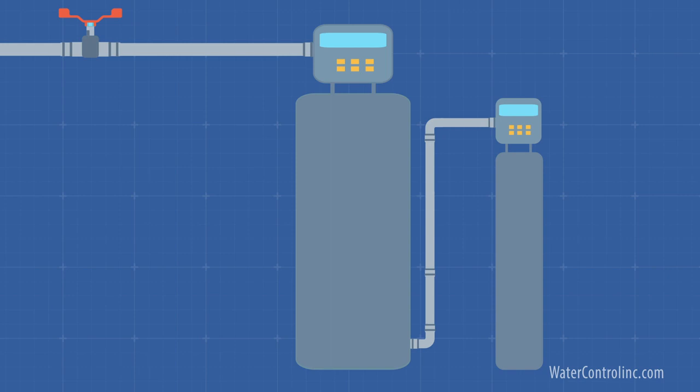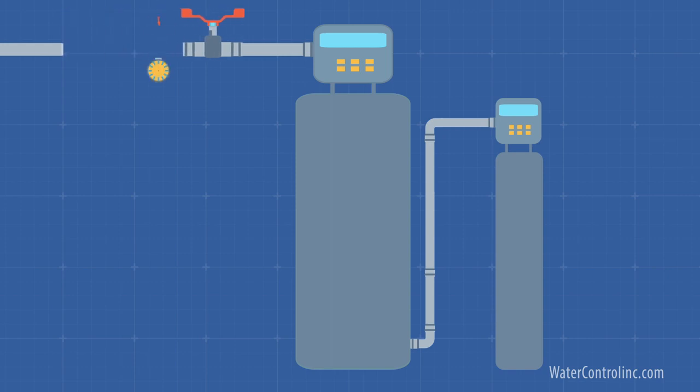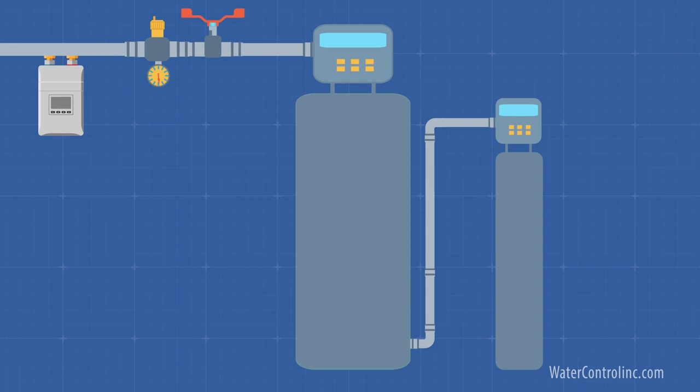It's also possible to deal with pH issues via the injection of certain chemicals, such as acetic acid or soda ash solution, or others. These systems involve simple chemical injector pumps which treat the water as it enters the facility.